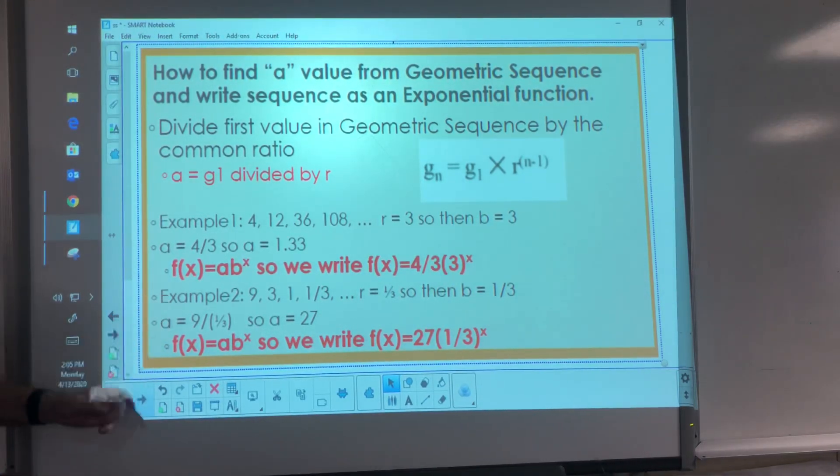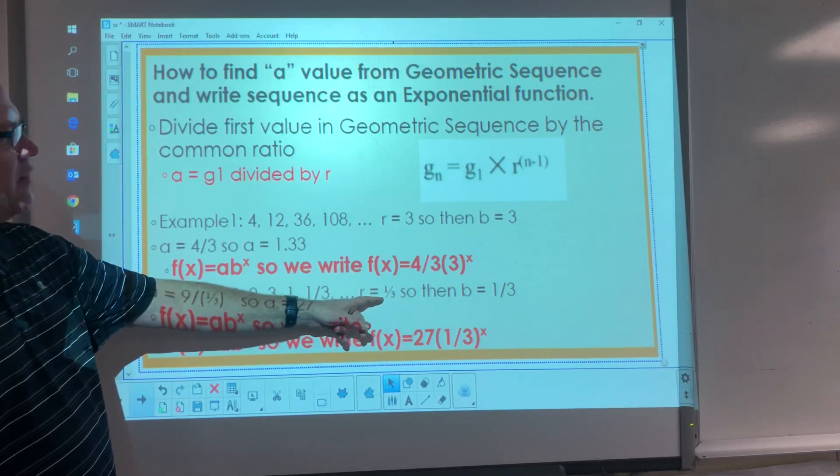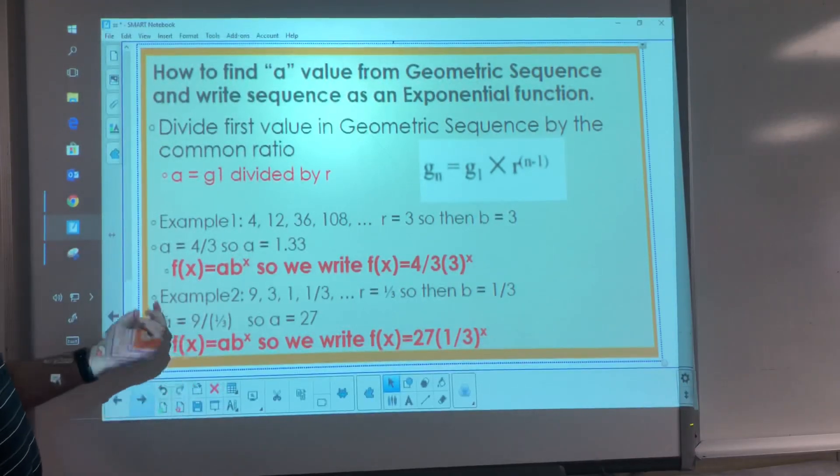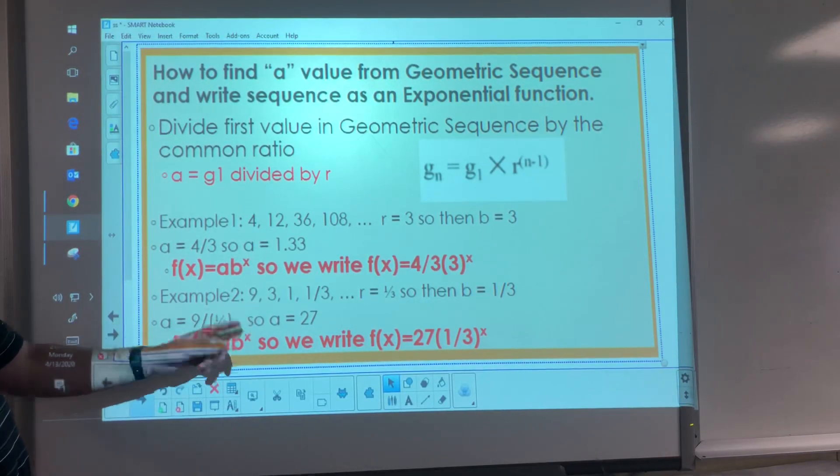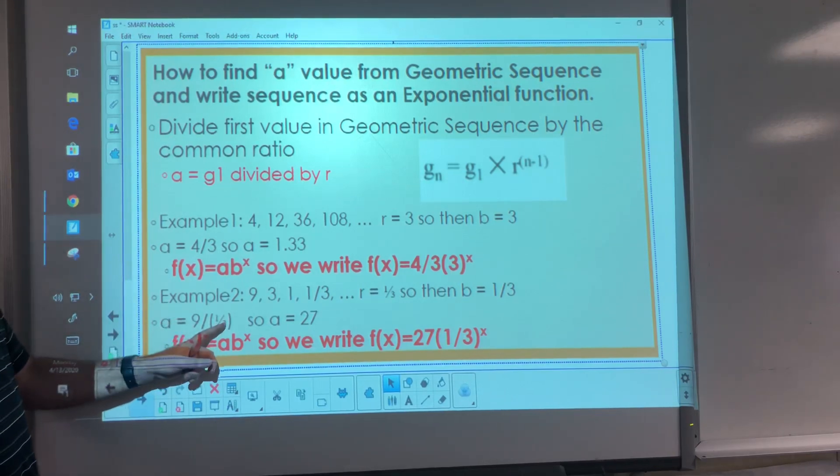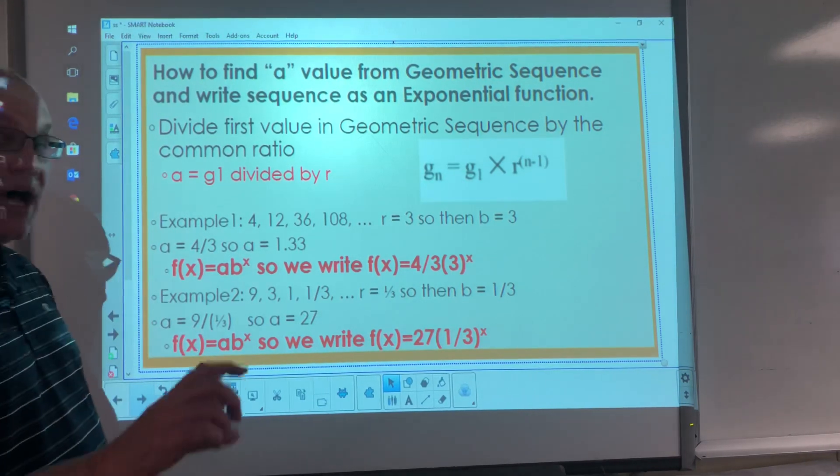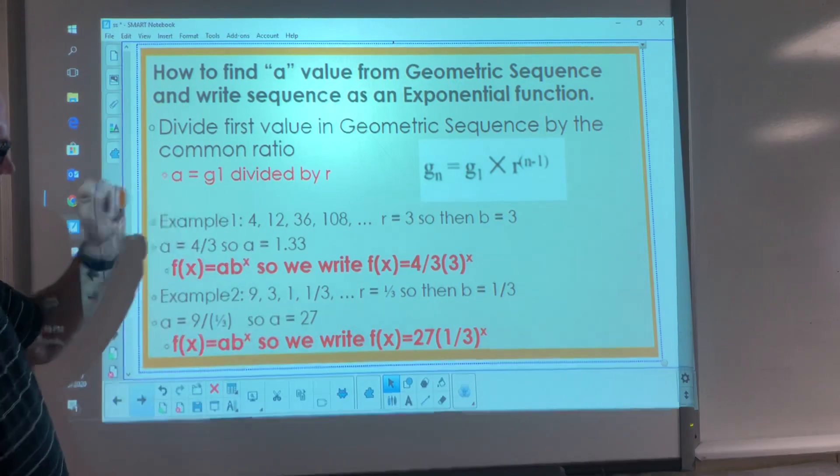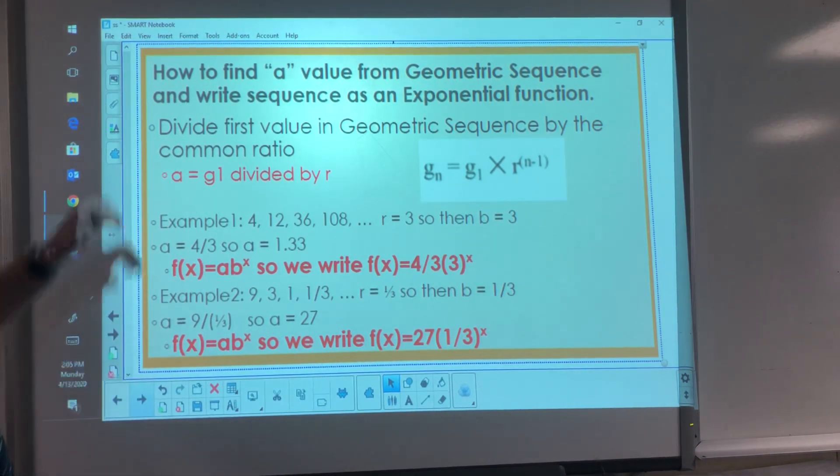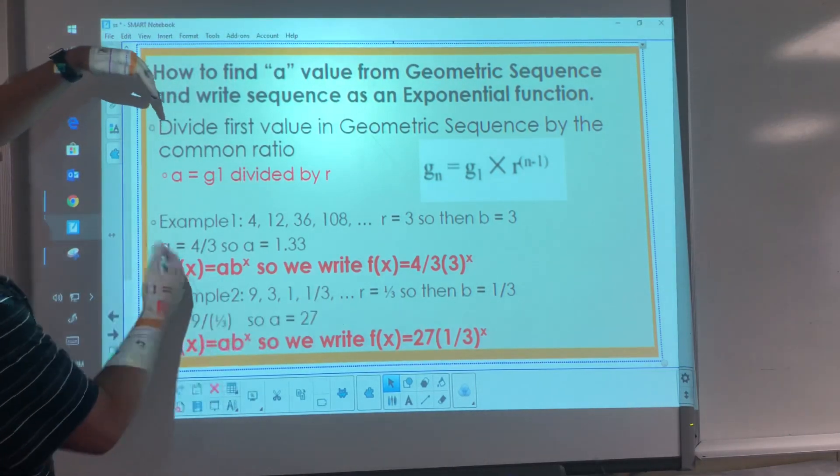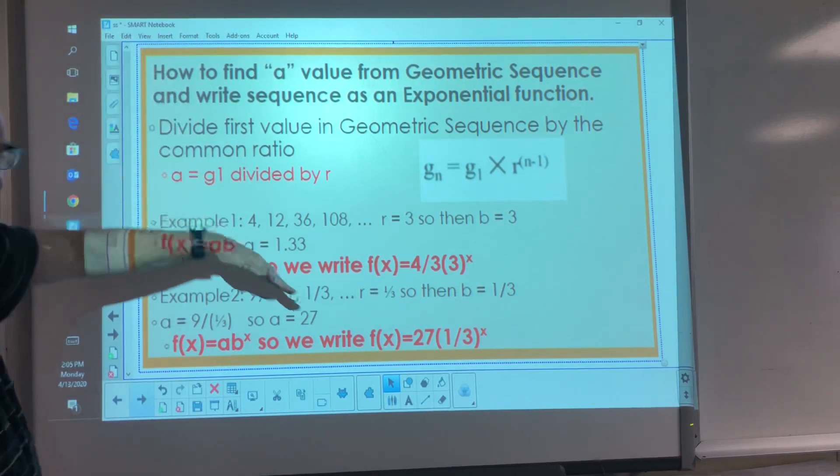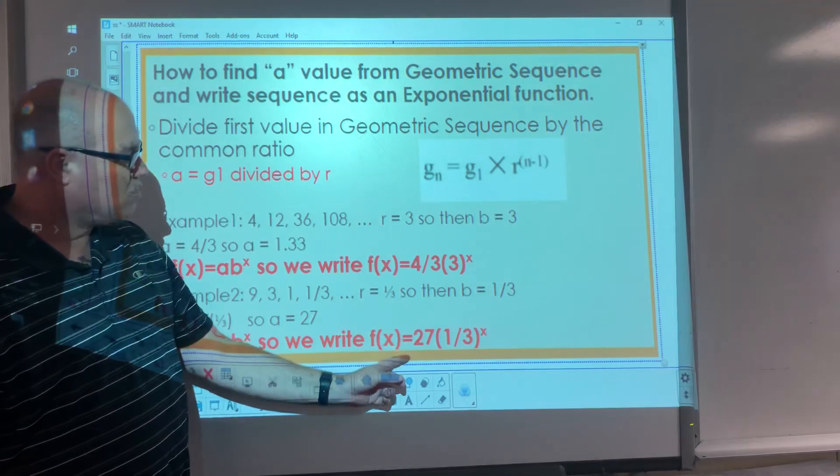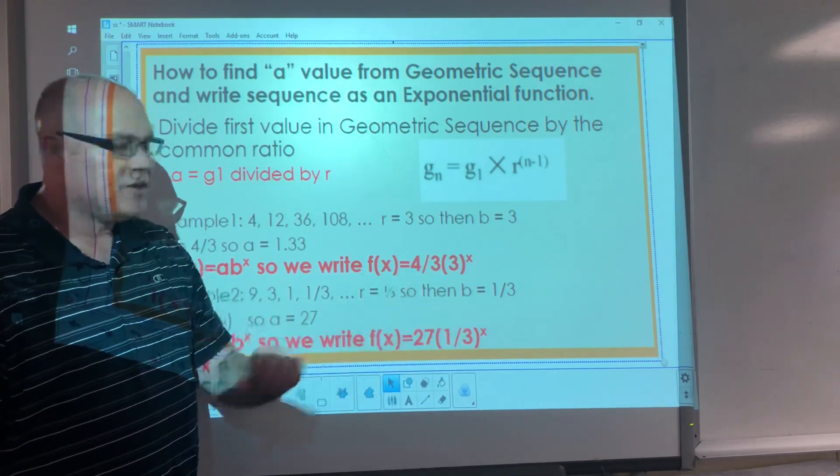Okay, example two. We know that r is 1 third. That means my b value is going to be 1 third. Okay? How do we figure out what a is? Well, we have to take 9 divided by 1 third. Be careful. 9 divided by 1 third. Remember, we don't divide by fractions. We multiply by the reciprocal. So it's going to be 9 times 3, so that's how we get a to be 27. So the y-intercept is actually 0, 27. That makes sense, right? This sequence was decreasing, so our exponential curve is also going to be decreasing as we go through. So our function equation is going to be f(x) equals 27 times 1 third to the x value.